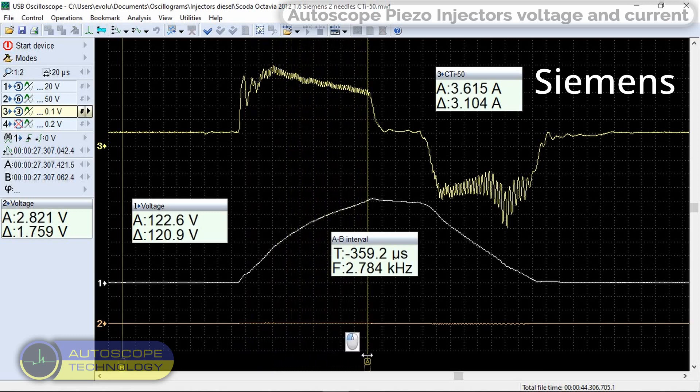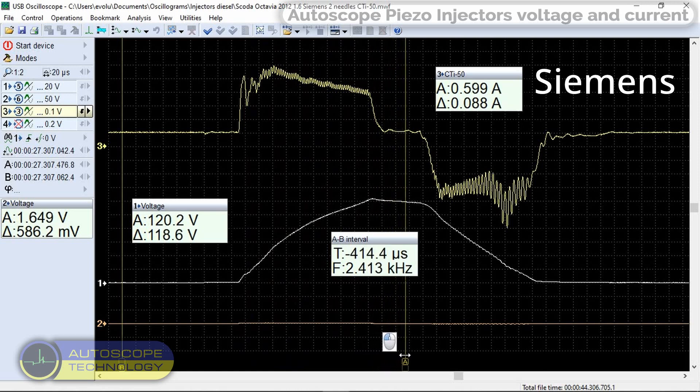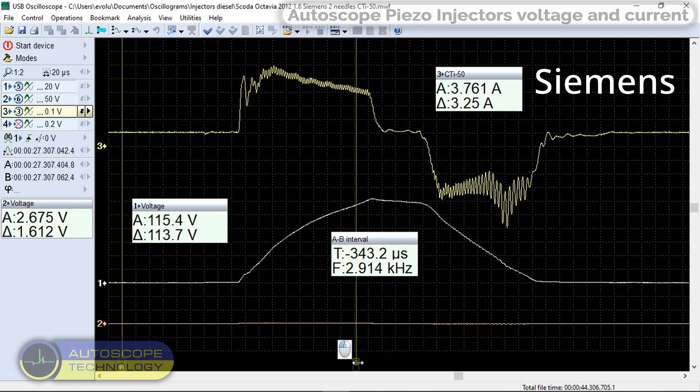This is the holding phase of the opened injectors. This is the closing phase of the injector. During the closing phase, the current becomes negative.